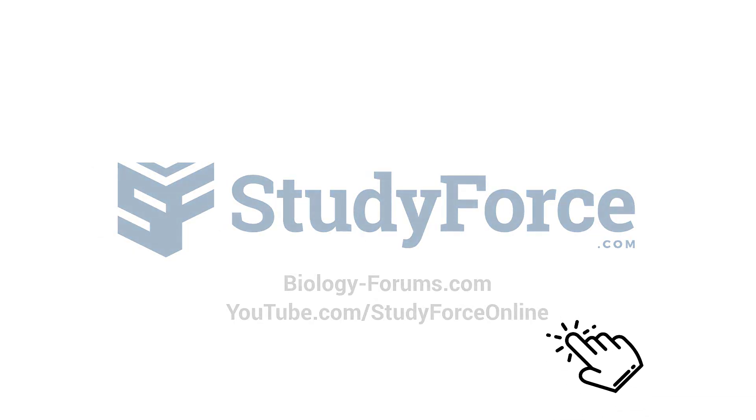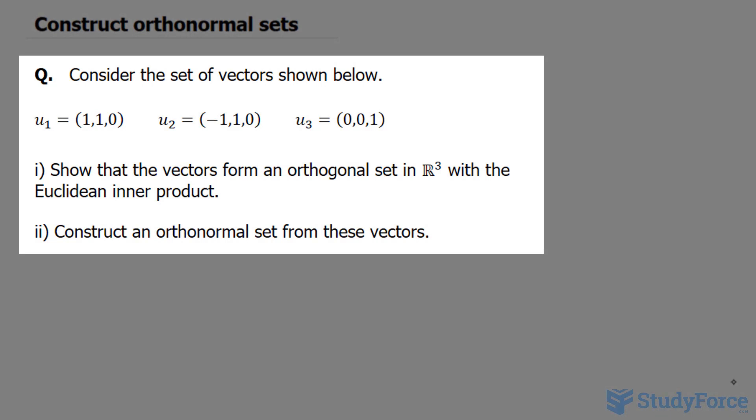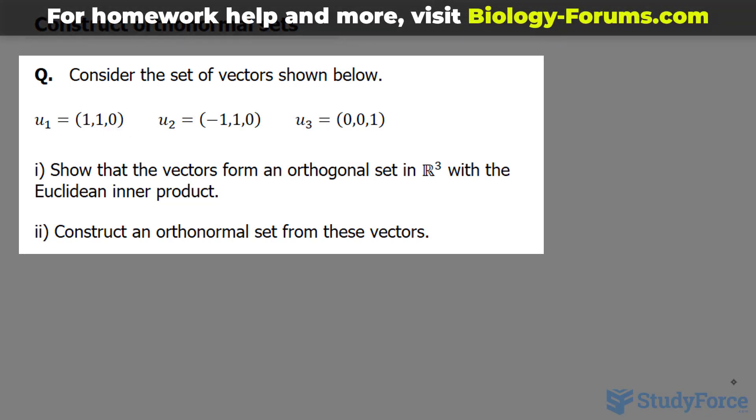In this lesson, I'll show you how to construct orthonormal sets. The question reads, consider the set of vectors shown below. Notice that each of these vectors has an x, y, and z component. Show that the vectors form an orthonormal set in R³ with the Euclidean inner product.